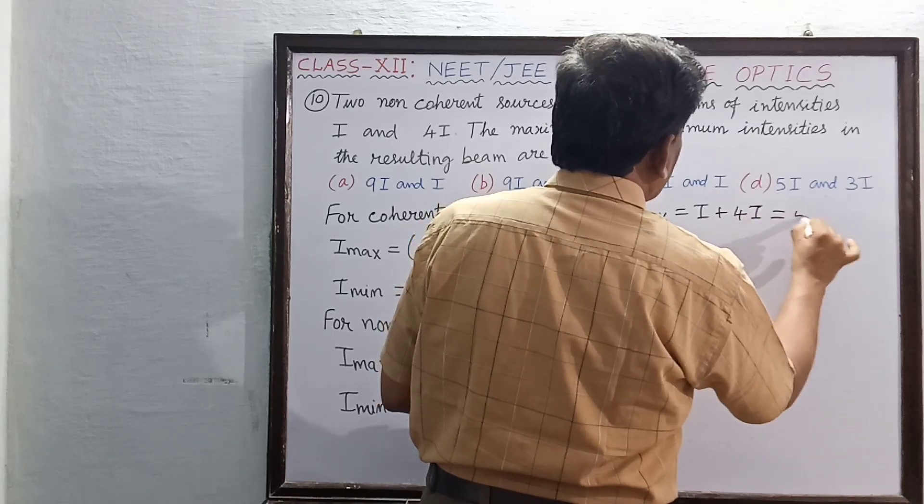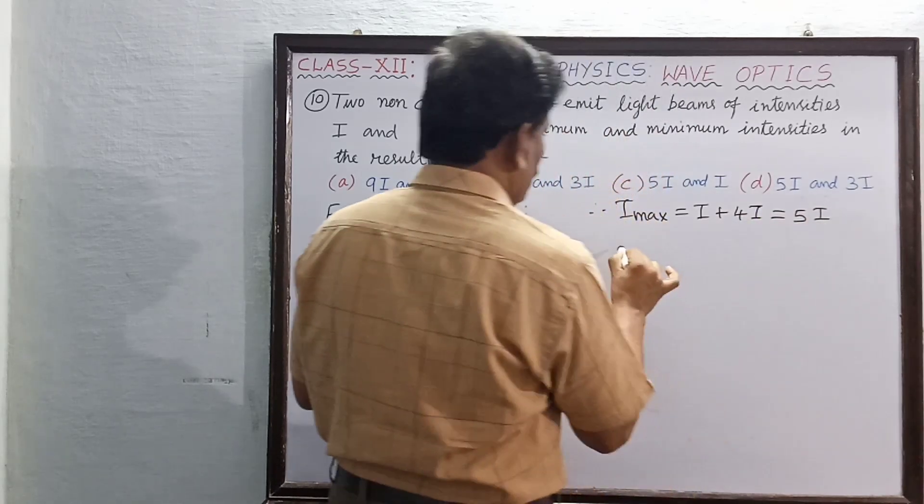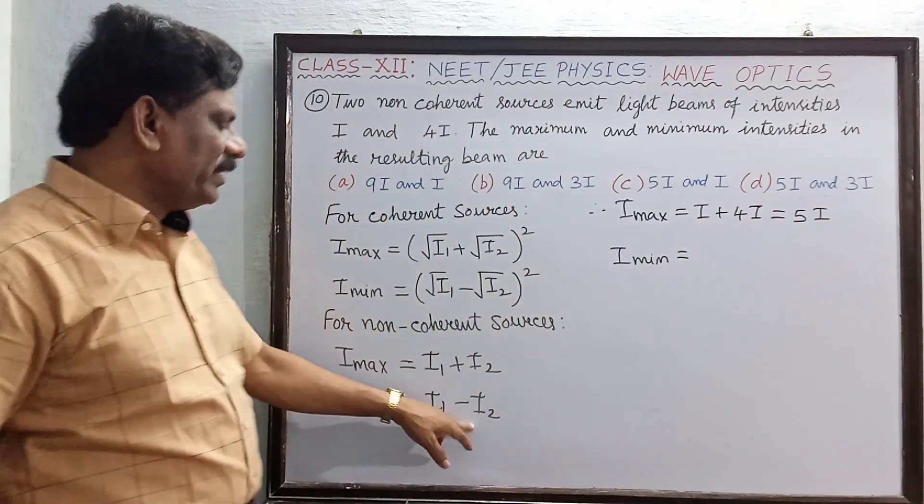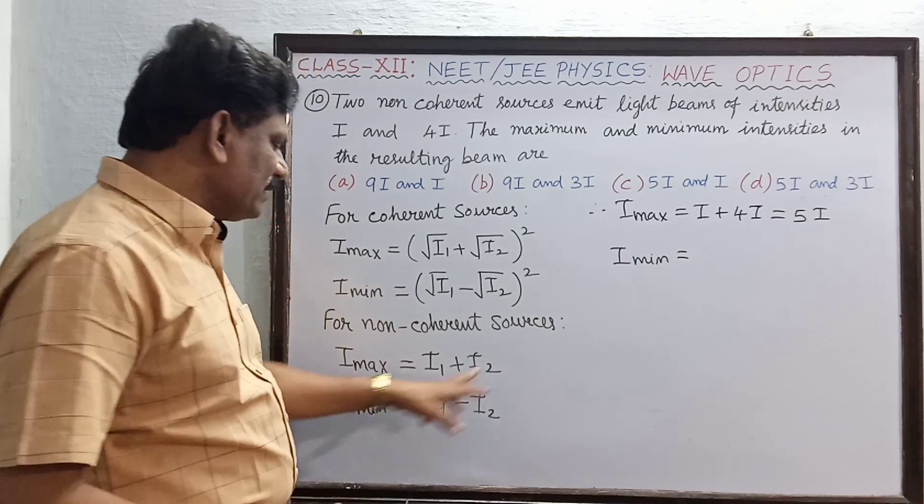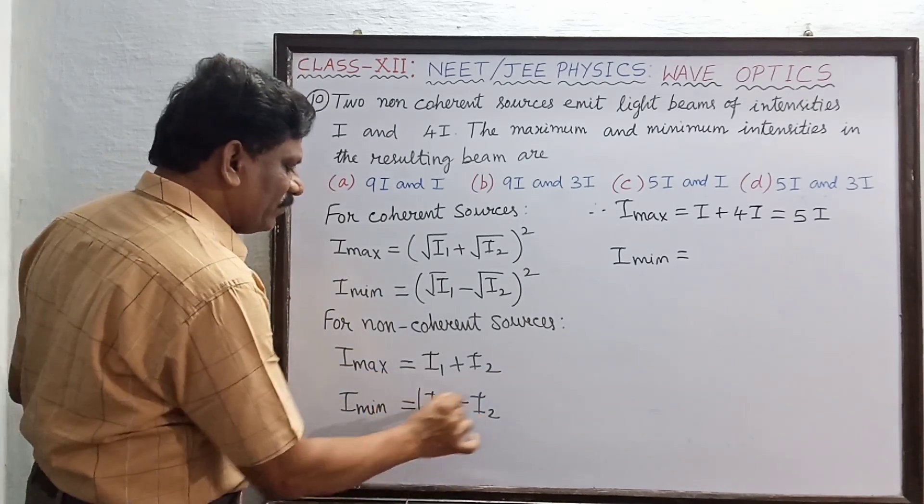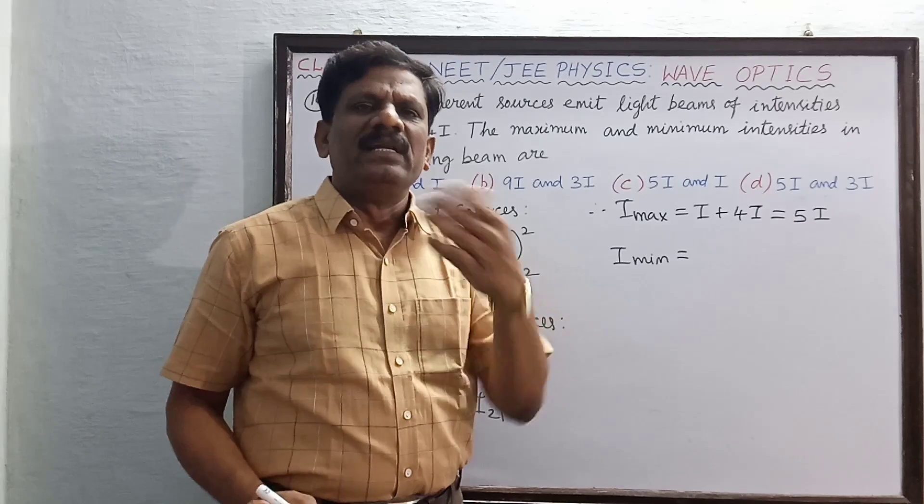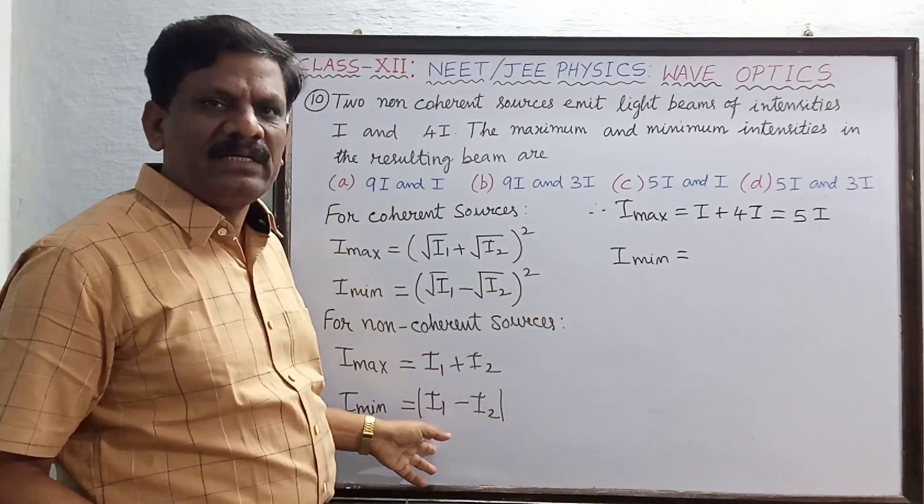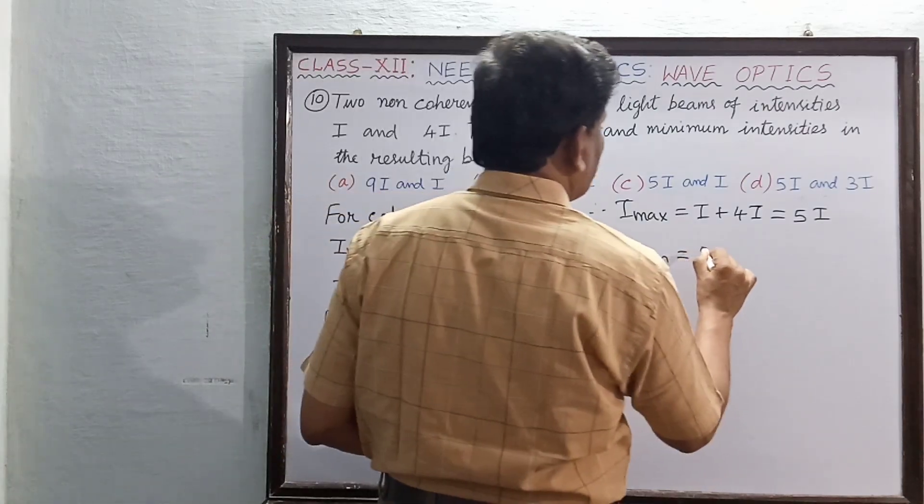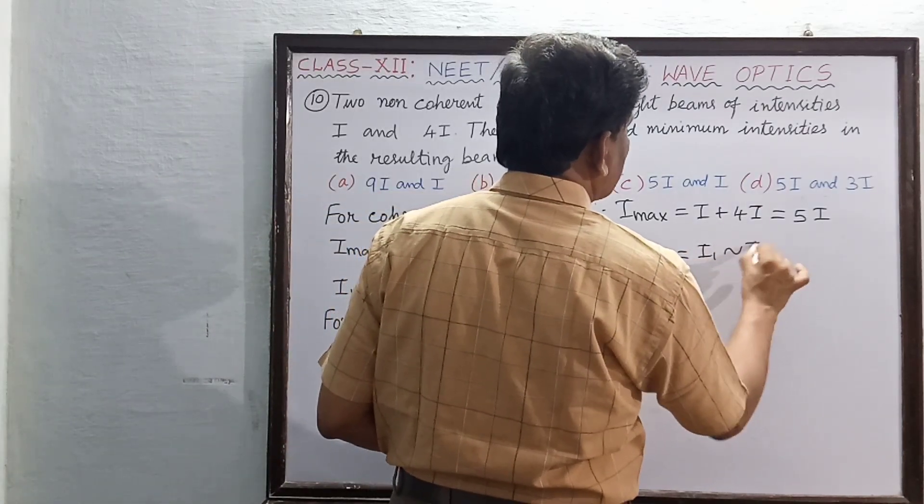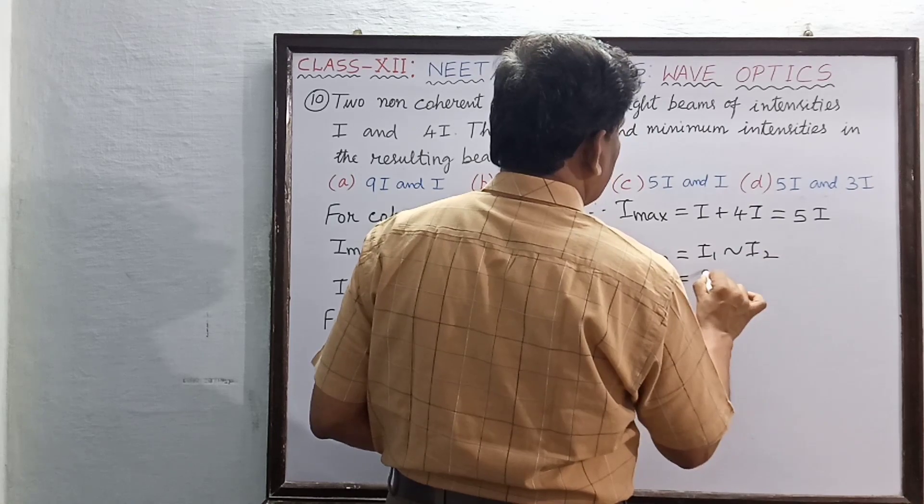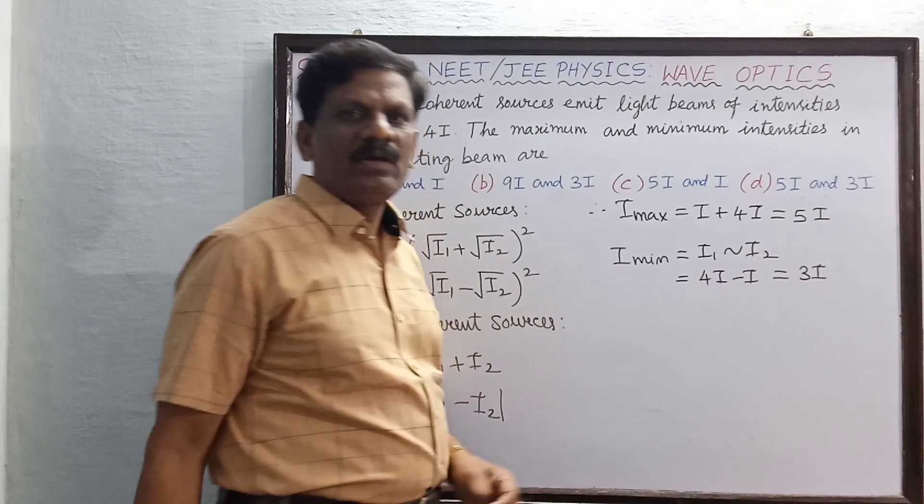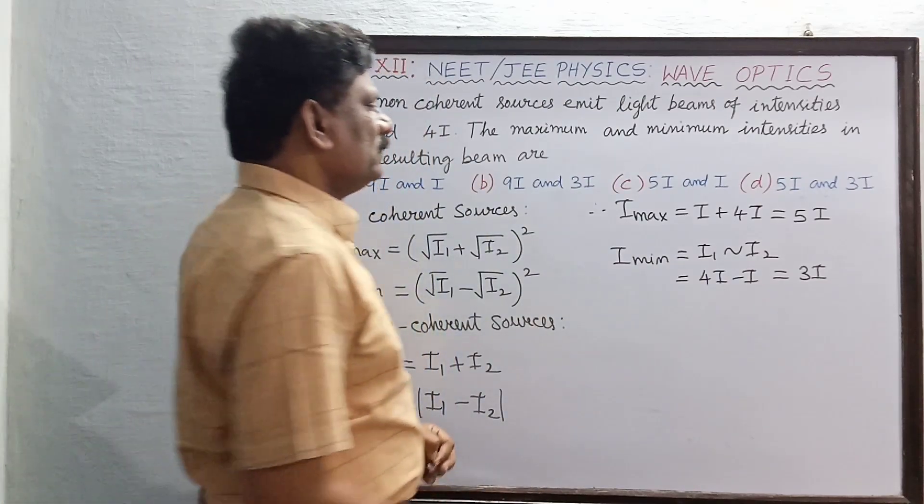And I minimum, though here it is given as I1 - I2, it is a modulus of I1 - I2. Whenever negative value comes, sometimes a lesser minus greater number will come, so modulus only we have to write. Or it is I1 difference I2. So I will take I1 difference I2, so this is equal to 4I - I, that is equal to 3I.